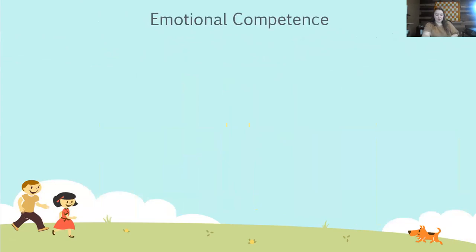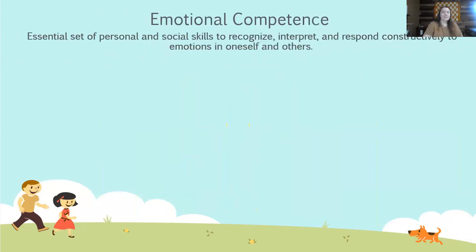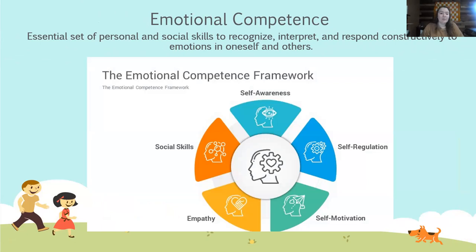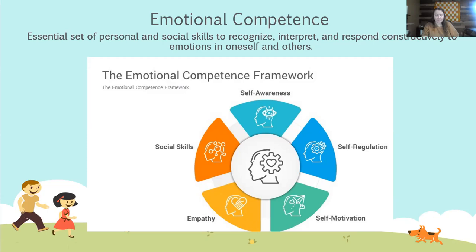Now we will move on to emotional competency. It's an essential set of personal and social skills to recognize, interpret, and respond constructively to emotions in oneself and others. This wheel for emotional competency includes self-awareness, self-regulation, self-motivation, empathy, and social skills. While considering emotional competency, you want to be aware of your own personal goals, values, and beliefs. You also want to understand cultural and ethnic differences and each other's worldview. Demonstrate self-regulation skills and know your personal triggers. We'll talk more about self-awareness, self-regulation, empathy, and social skills throughout the remaining training.